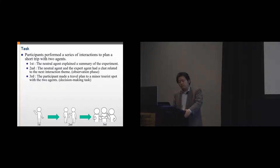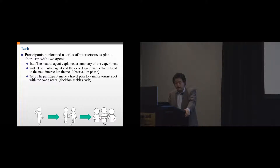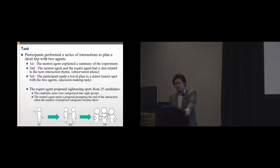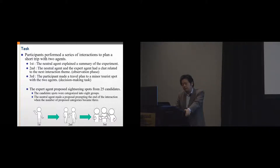In the second interaction — the observation phase — the neutral agent and expert agent had a chat related to the next task of short trip planning. The agent asked questions about the participant's preferences five times. In the third interaction — the decision-making task — participants made a travel plan to a minor tourist spot with two agents, choosing four sightseeing spots out of 25 candidates. This continued until participants declared termination. The neutral agent prompted ending the interaction when proposed categories reached three.